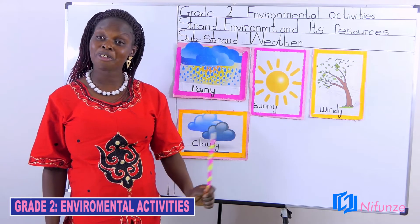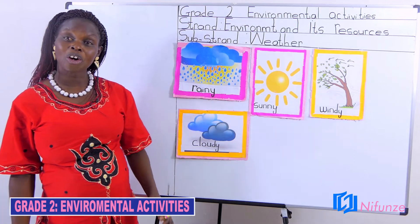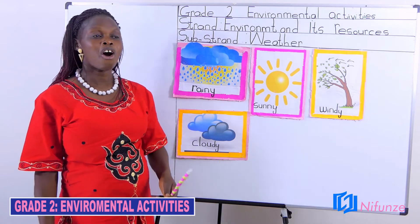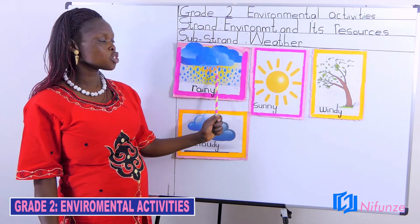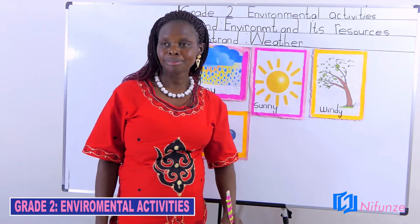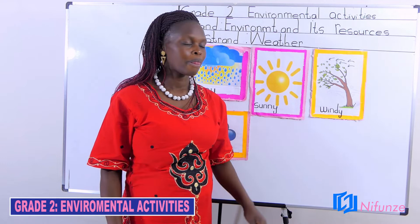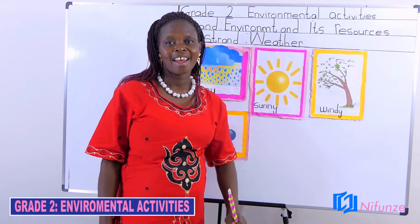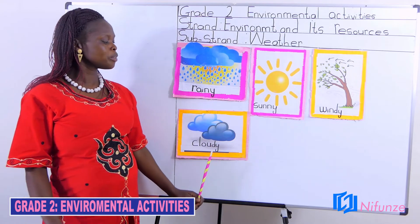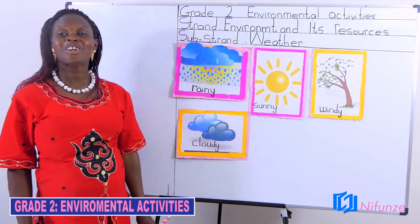Or even you can take a photo. If it is rainy, you can take a photo, or you can draw, or you can even look for magazines and newspapers for a picture that is showing a rainy weather. The same for windy weather — you look for a magazine, a newspaper, or even you can take a photo of a windy weather. Finally, you look for a picture, or you take a photo, or even you can draw and color a cloudy weather. And then we shall continue from there.